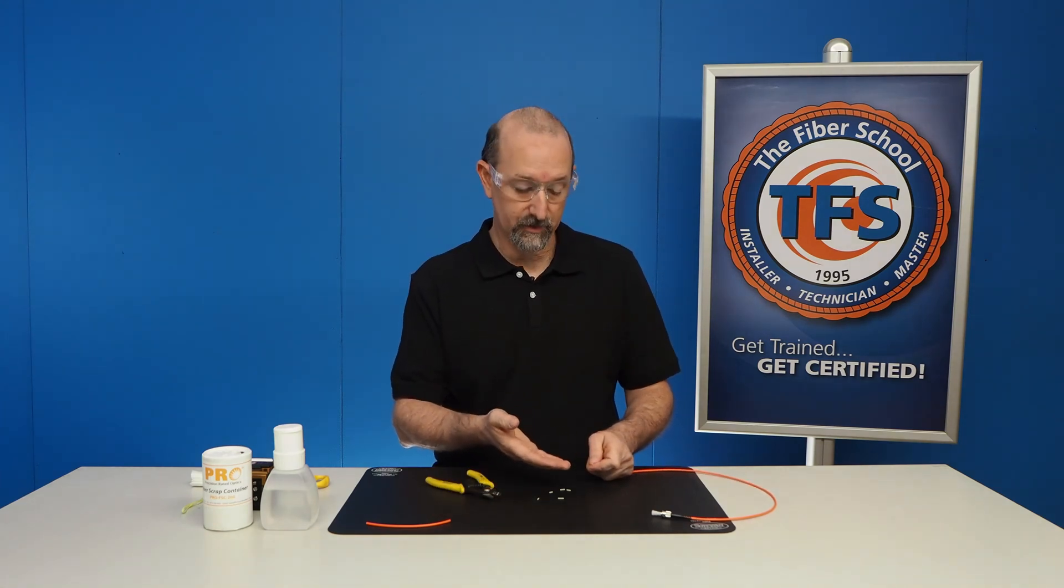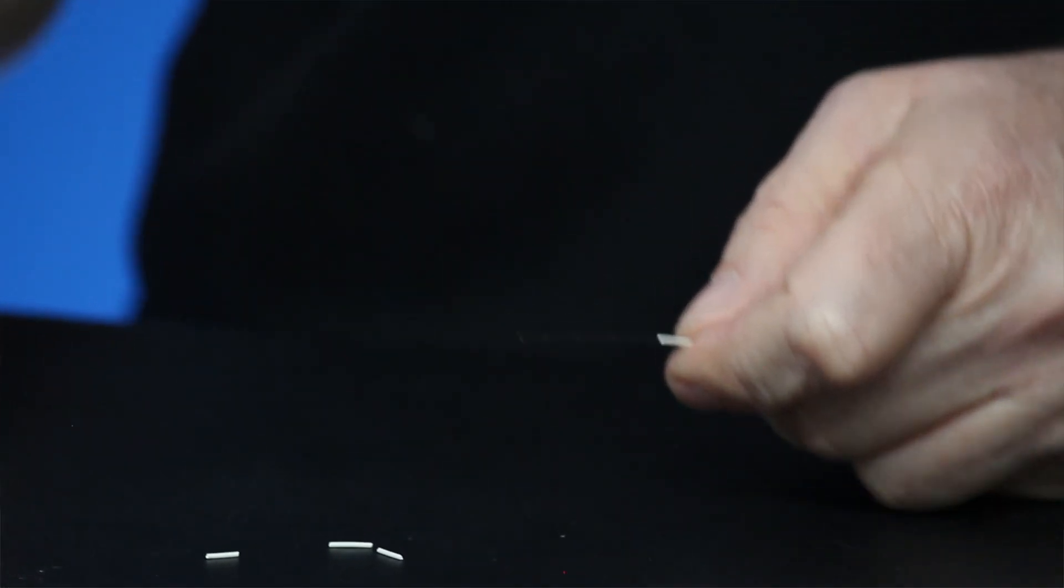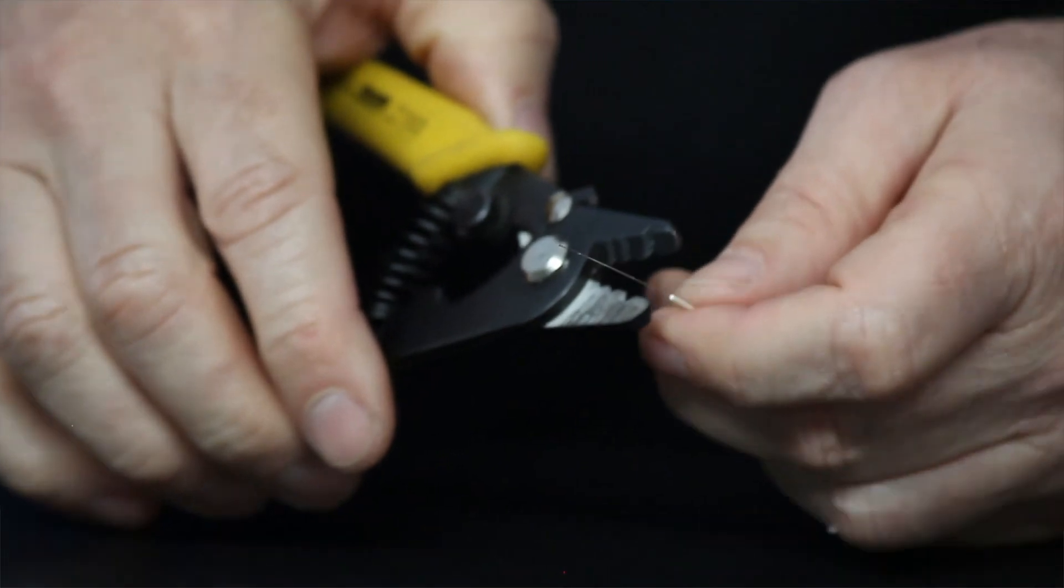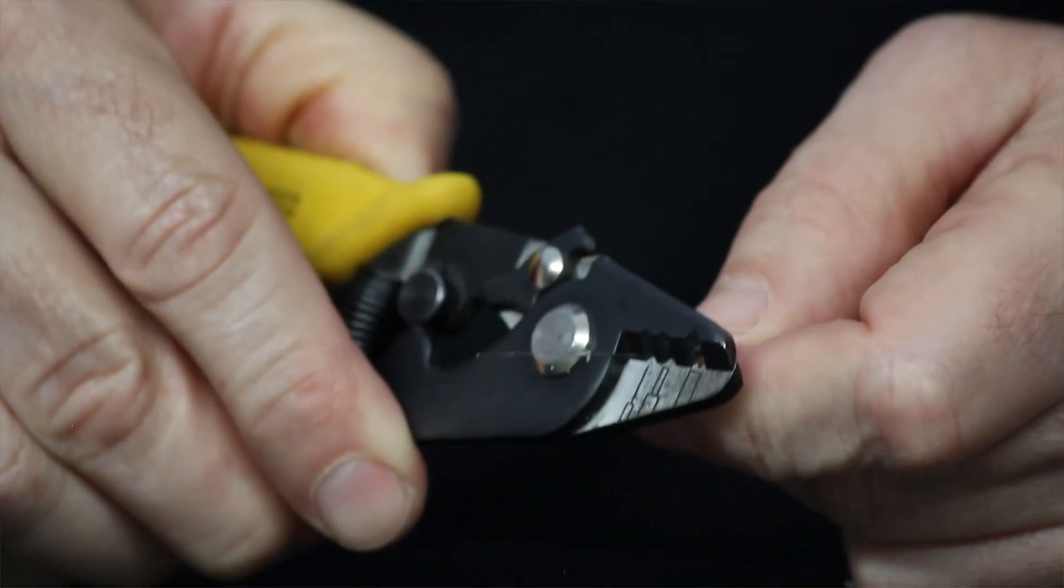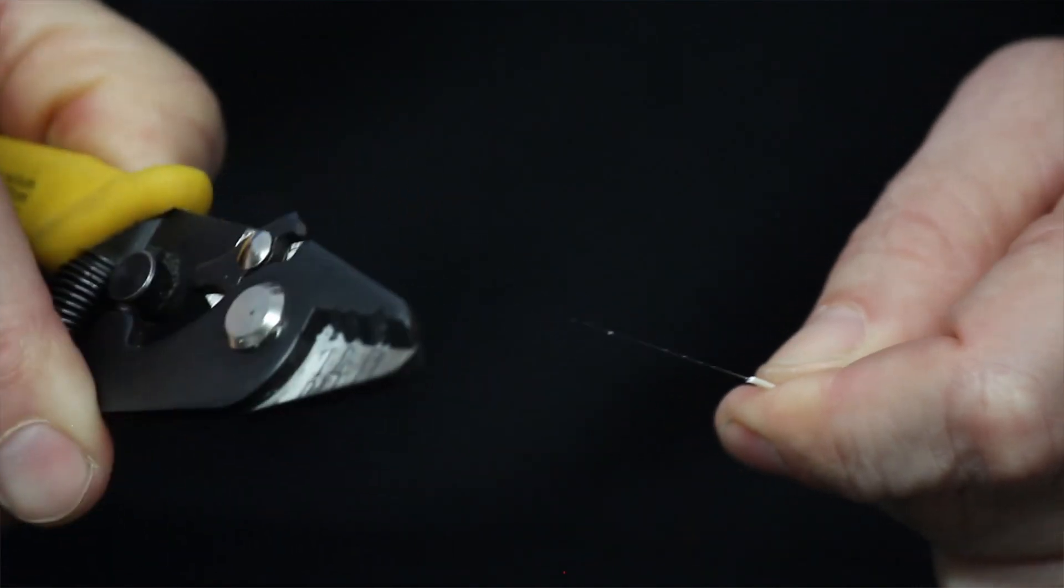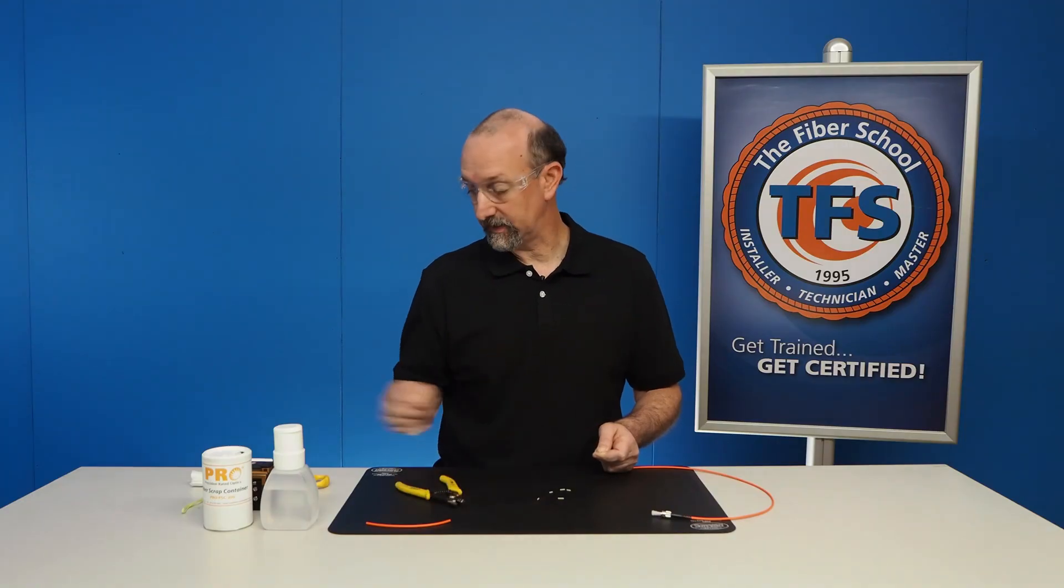So now we have the exposed acrylate coated fiber which is a 250 micron. Now we're going to have to strip that off before we can cleave it. So we take our three-hole strippers. We use the last hole. Clamp down on that and we slide.